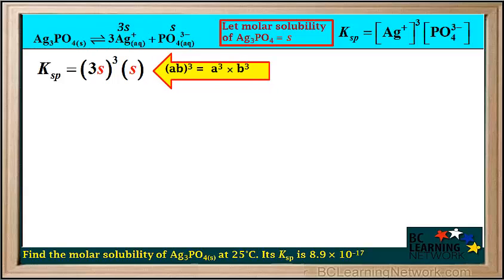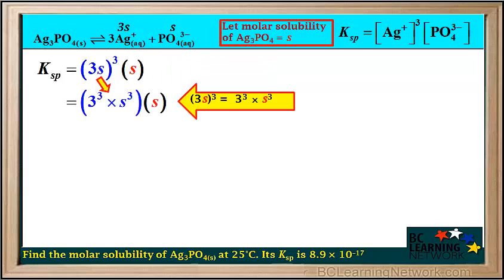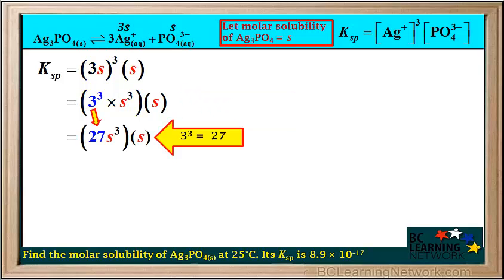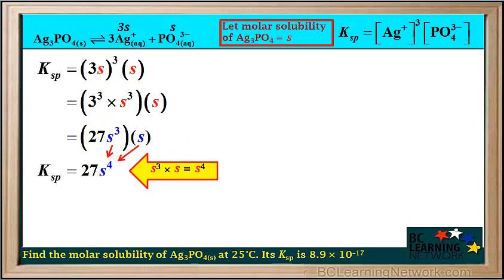We start with the expression Ksp equals 3s all cubed times s. Math tells us that (AB)³ equals A³ times B³, so (3s)³ equals 3³ times s³. 3³ equals 27, so we put 27 in for 3 cubed. s³ times s equals s to the fourth, so Ksp equals 27s to the fourth.